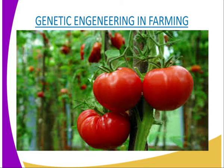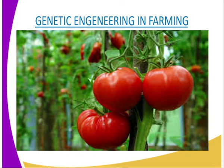Normally, tomatoes, as we can see from our diagrammatic representation, are harvested green and treated with ethylene gas for ripening. This has the disadvantage that the tomatoes lose their flavor. In genetically modified tomatoes, there is deletion of the gene responsible for enzyme production that leads to fruit softening. Hence, the tomatoes stay on the plant to ripen, allowing fuller development of flavor without softening.